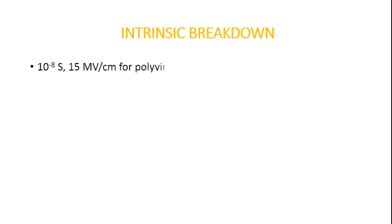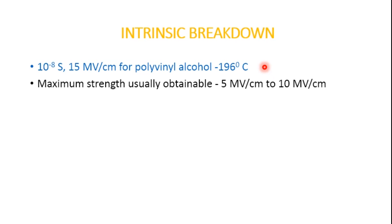Coming to the first type — intrinsic breakdown. When voltage is applied for a short duration of the order of 10⁻⁸ seconds, the dielectric strength of the solid material increases relatively rapidly up to an upper limit called the intrinsic electric strength. The maximum electrical strength recorded is 15 MV per centimeter for polyvinyl alcohol at 186°C. Usually the maximum strength is up to 10 MV per centimeter under experimental conditions.